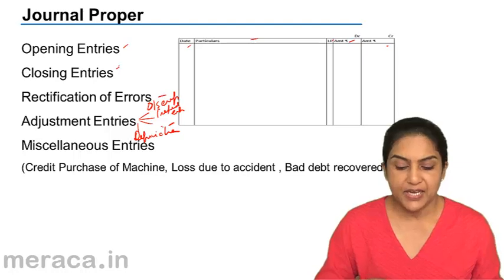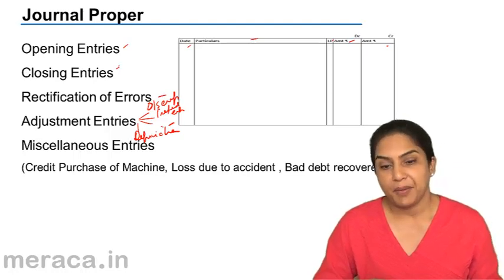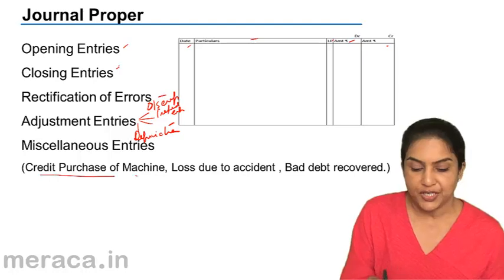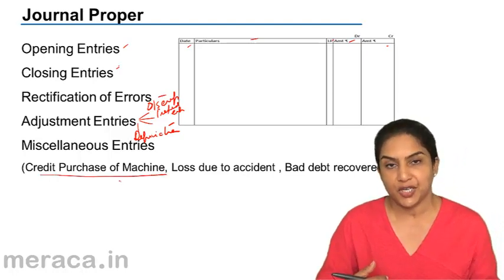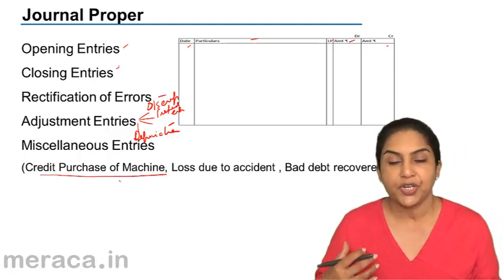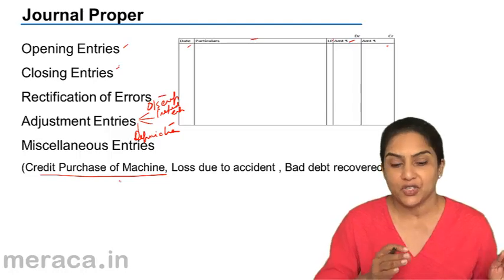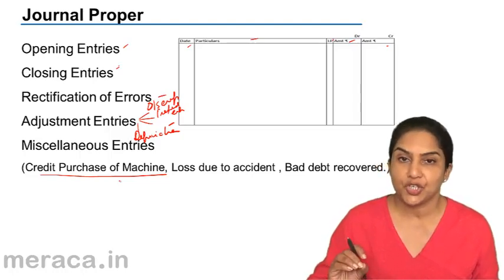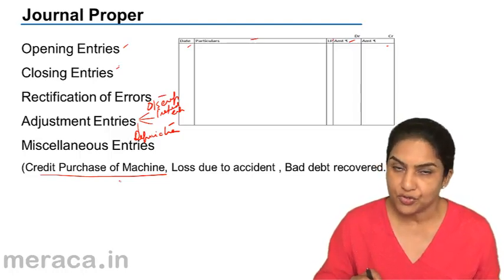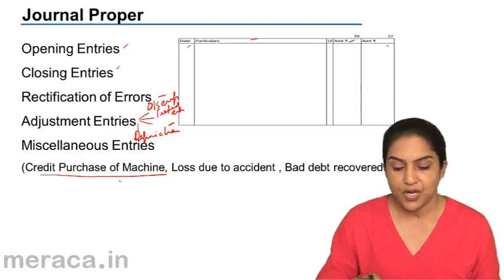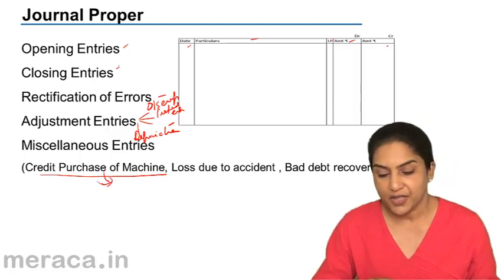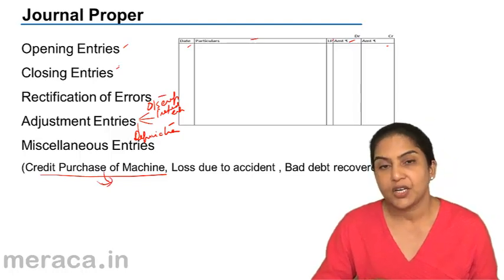Other miscellaneous entries: for example, if we have a credit purchase of machinery — can we put it in the purchase day book? No. Why? Because it is a credit purchase of a machine, not a credit purchase of goods. So such a transaction would be recorded in the journal proper.